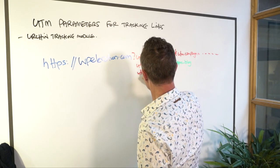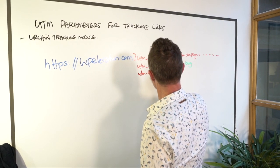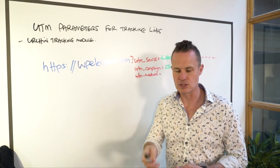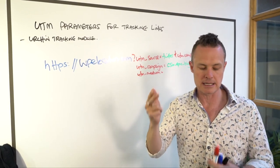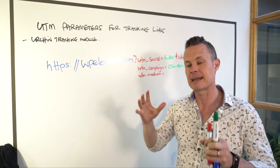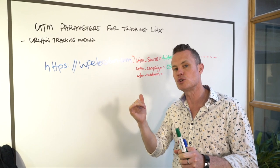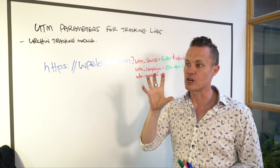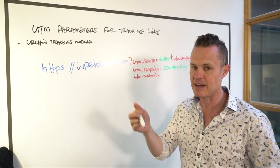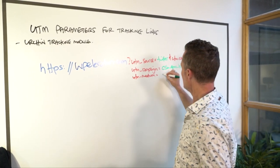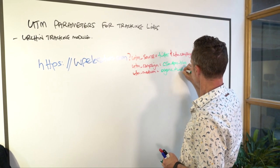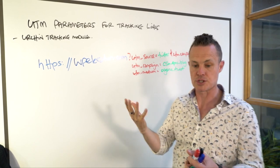The next parameter is medium. Medium is the thing that they've clicked on to get here — that can be a video, an email, a tweet, a Facebook post update, a group post, an info card on YouTube, or a social post or quote card on Instagram. You just want to give as much detail about the thing that they've actually clicked on. In this case I'm going to say organic underscore tweet, because it's something that I've just tweeted onto Twitter.